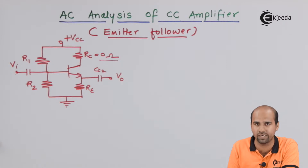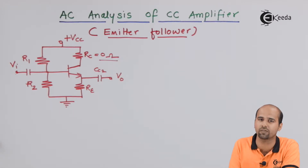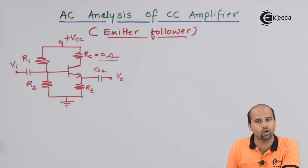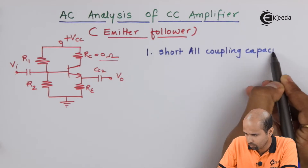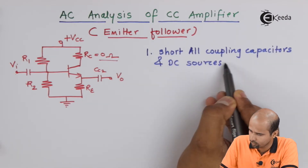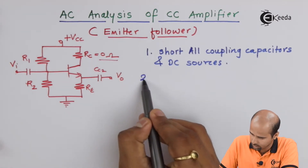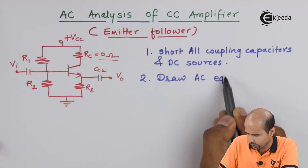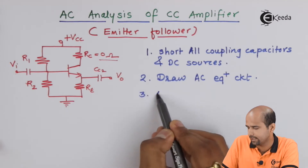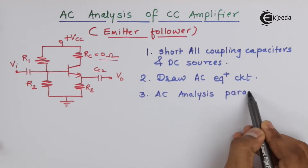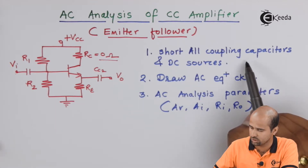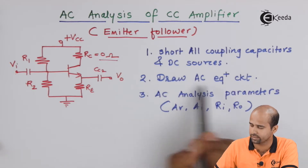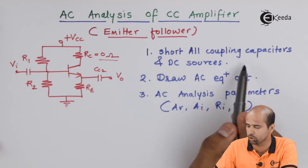Before any AC analysis we have to do DC analysis, complete the calculation, get the values of currents at the Q point, and then move further for AC analysis. For AC analysis, we follow these steps: first, short all coupling capacitors and DC sources, then draw the AC equivalent circuit, and then perform the actual AC analysis.